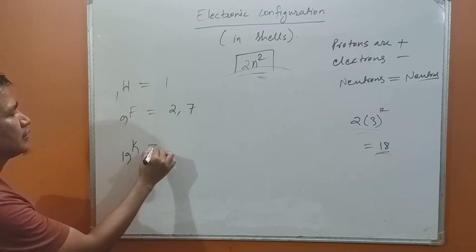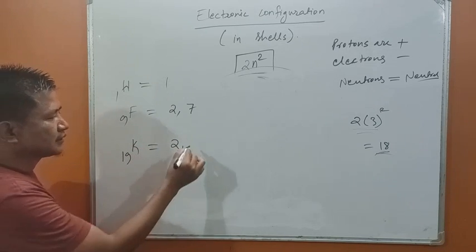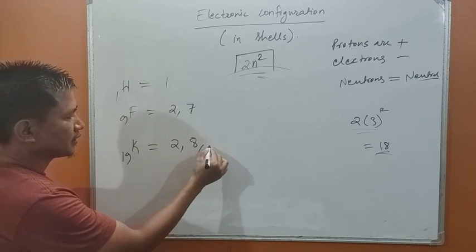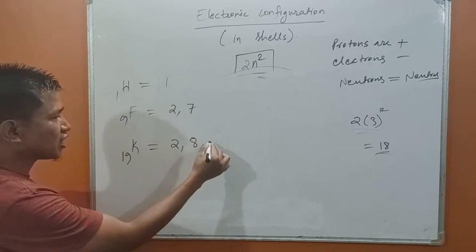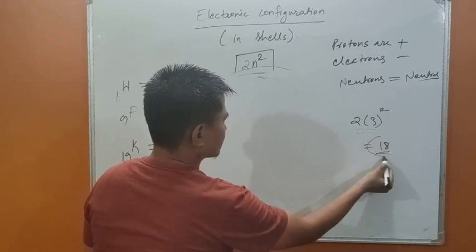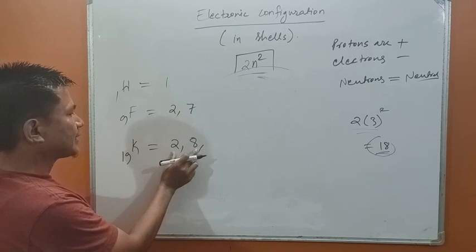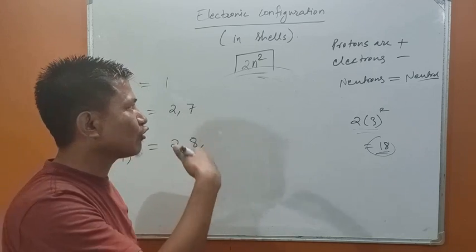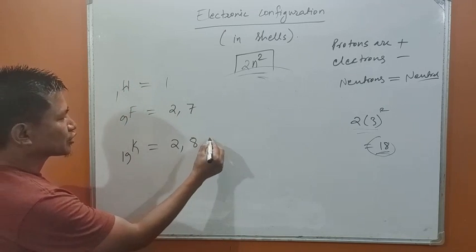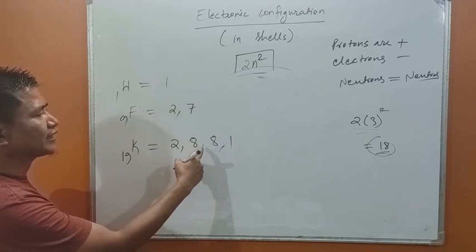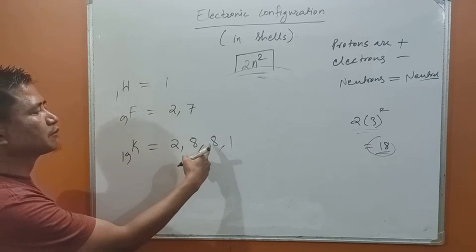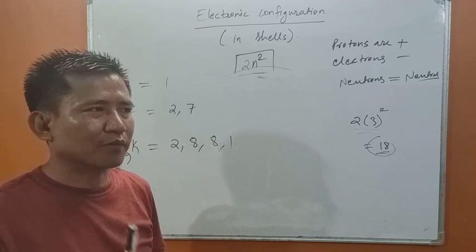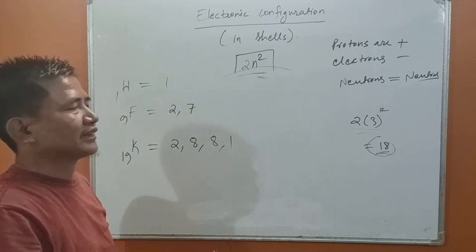For potassium, atomic number 19, we place 2 electrons in the first shell and 8 in the second shell. We cannot write more than 8 in the outermost orbit, so we write 8 in the third shell and 1 in the fourth shell: 2, 8, 8, 1. That gives 2 plus 8 is 10, plus 8 is 18, plus 1 is 19. Remember: the outermost orbit should contain 8 electrons or fewer.